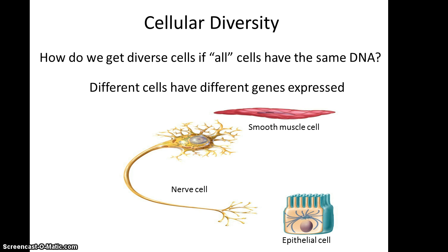Next, cellular diversity. It turns out that all of our cells have basically the same DNA. So if all cells have the same DNA, how do we get cellular diversity — smooth muscle cells versus nerve cells versus epithelial cells, and so on? It turns out this differentiation occurs because each cell type only expresses some of the genes found on that DNA. Smooth muscle cells express genes specific for smooth muscle, and nerve cells express genes specific for nerve cells, and so forth.